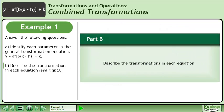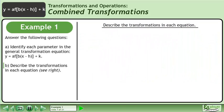In part b, describe the transformations in each equation. The first transformation is y equals 1 over 3 times f of 5x.